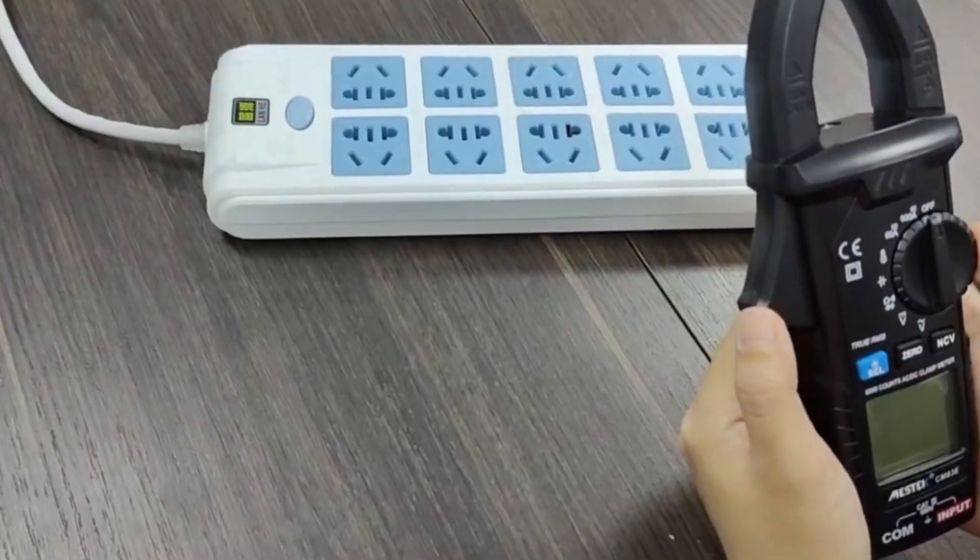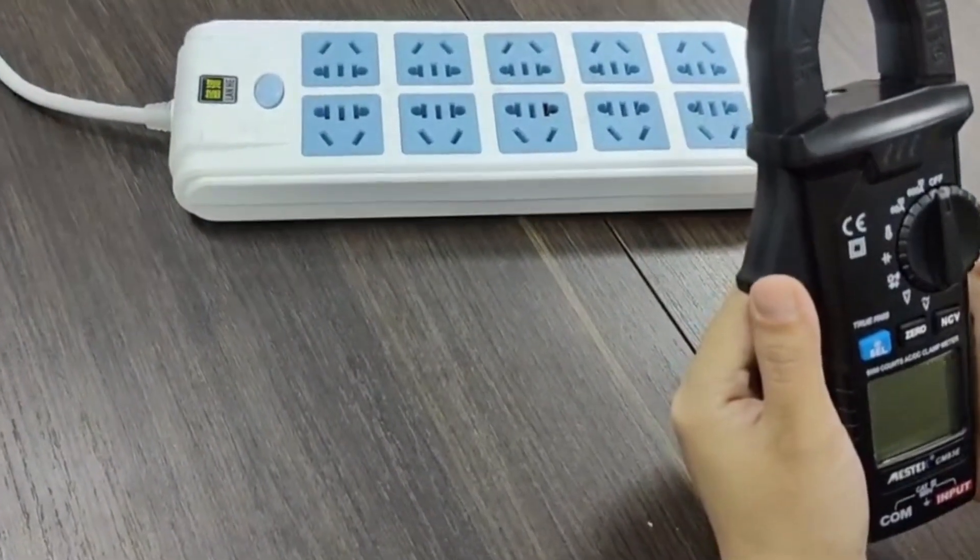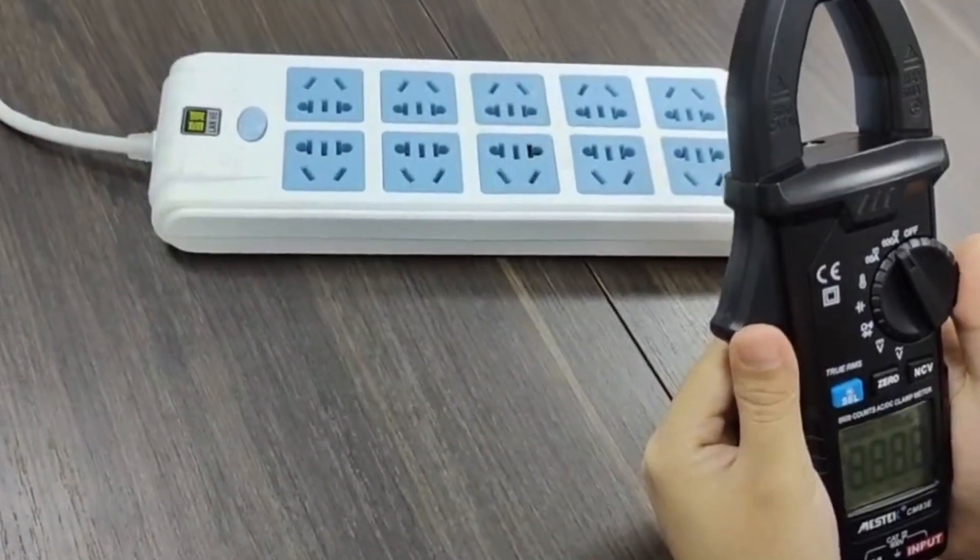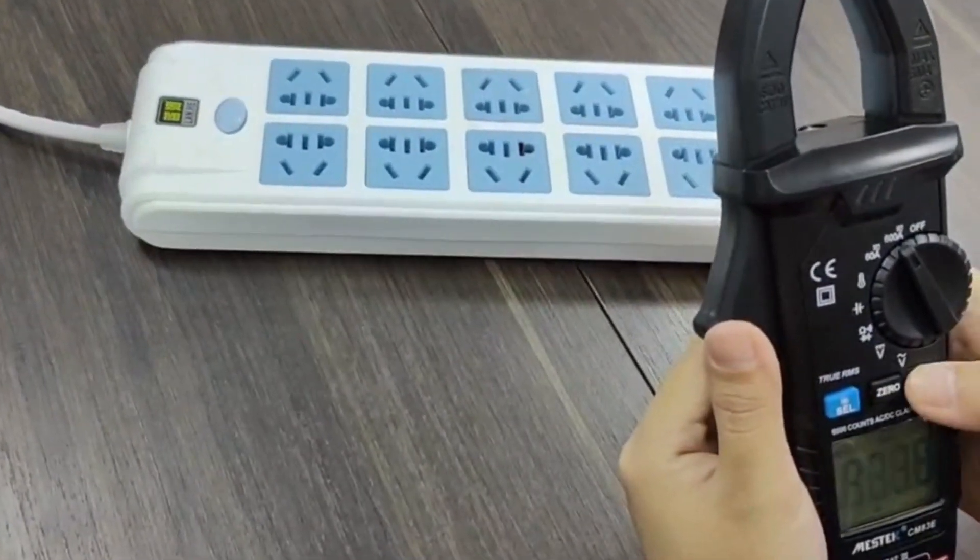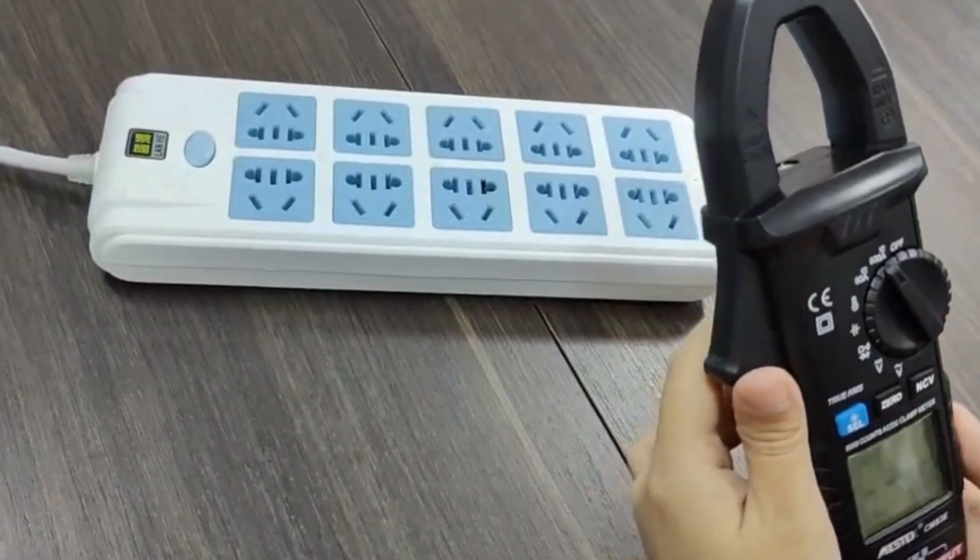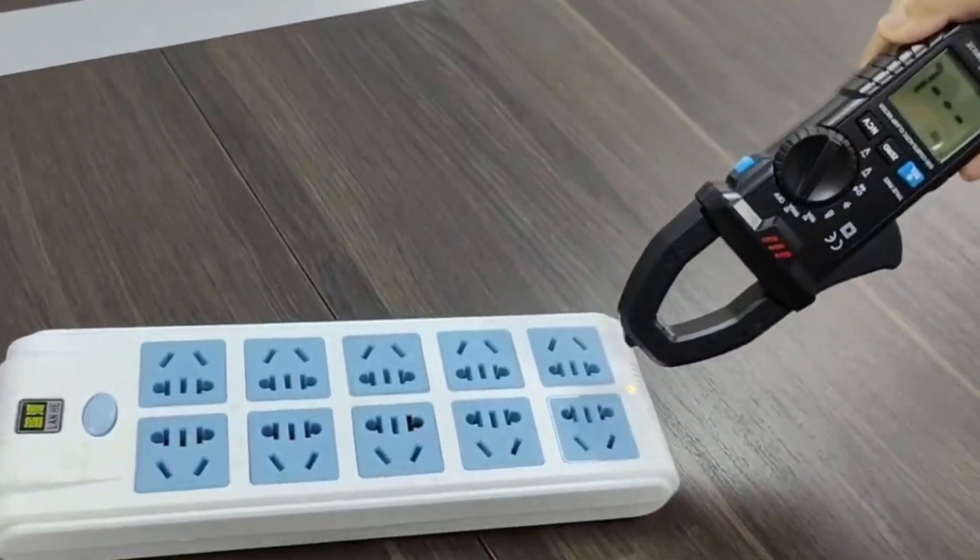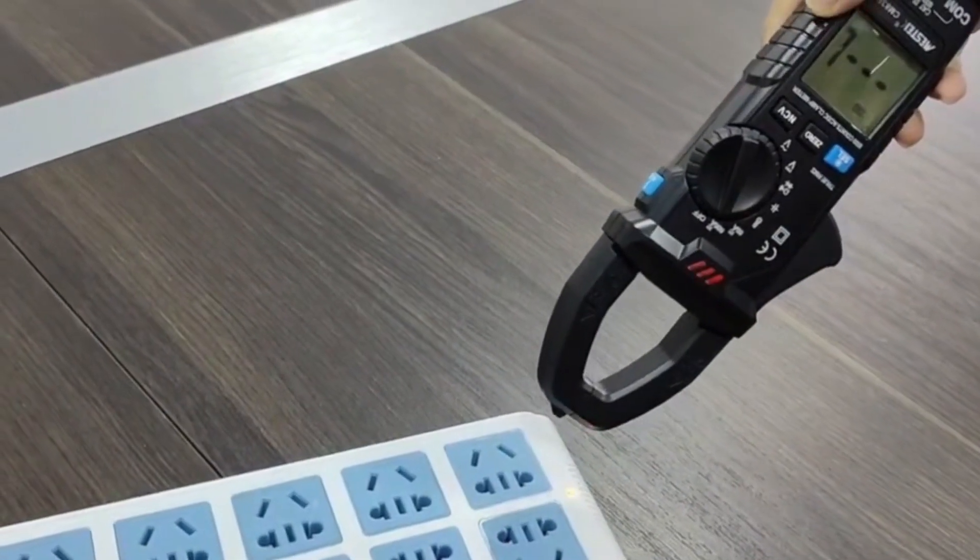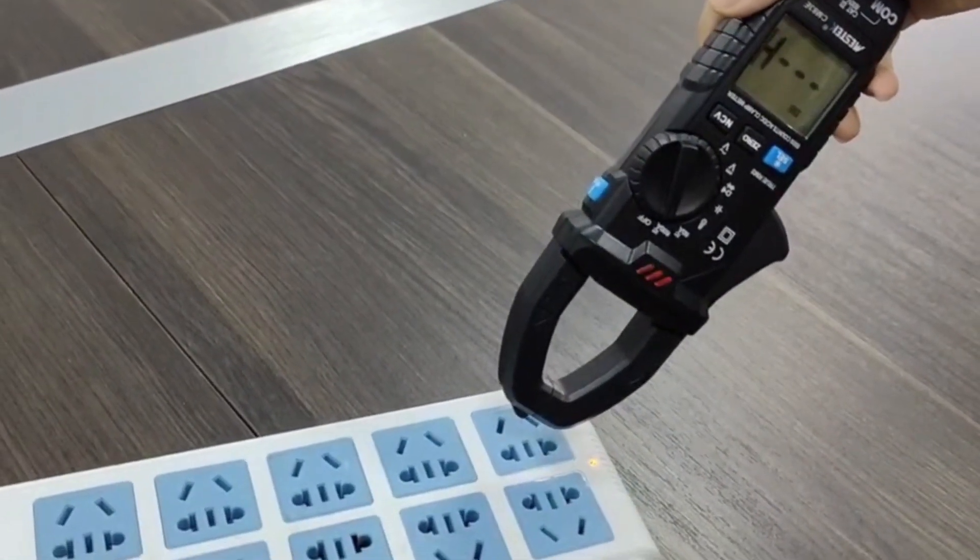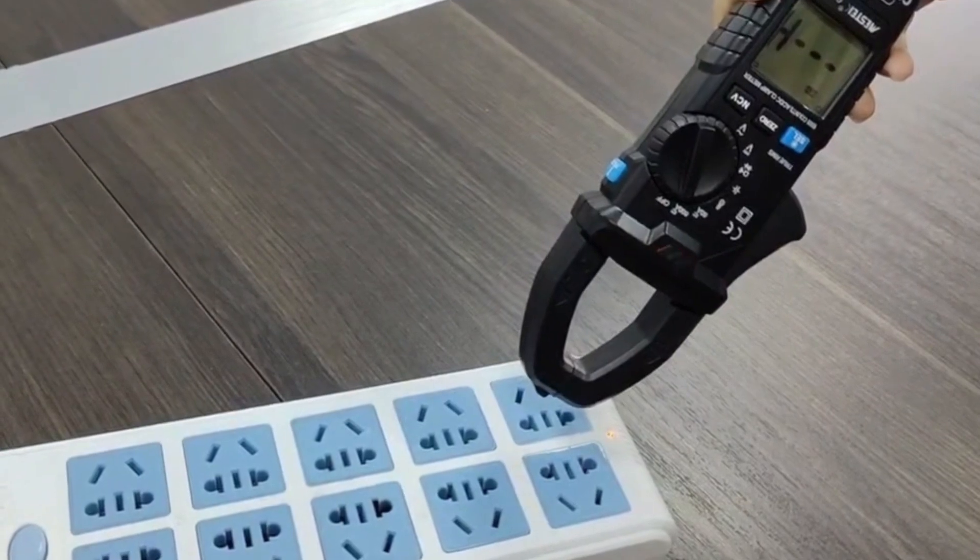Now I'll demonstrate the NCV function. First, power on the device. Press the NCV function button - you'll see NCV on the screen. The L indicates low voltage and H indicates high voltage.